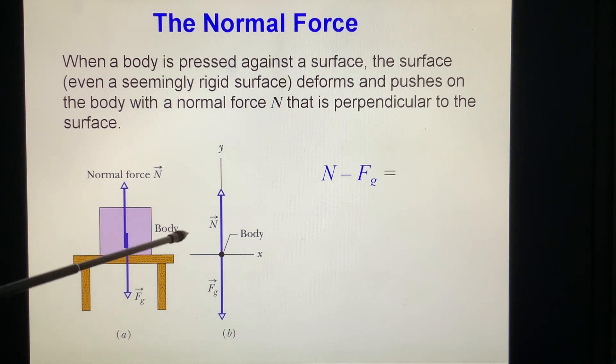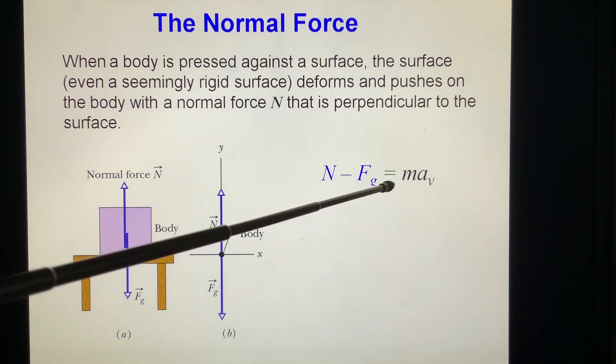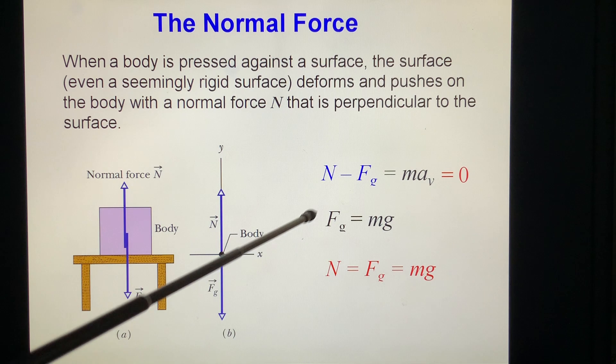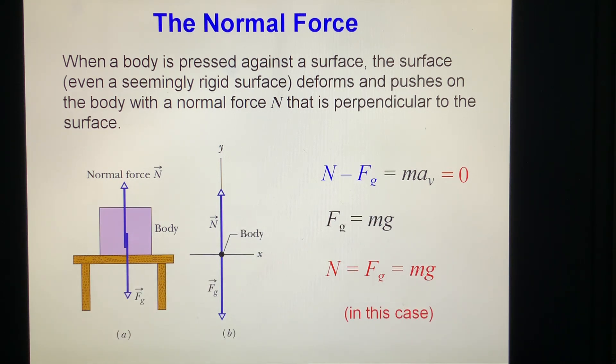So N minus Mg equals zero. N equals Mg. Fg equals Mg, N equals Mg. Remember, the normal force equal to Mg is only in this case. We never define the mu. Anyway.